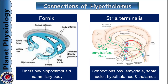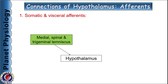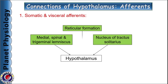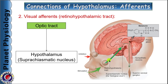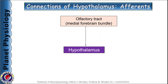Hypothalamus receives collaterals from the medial, spinal, and trigeminal lemnisci. It also receives signals from the nucleus of tractus solitarius and reticular formation — all collectively termed somatic and visceral afferents — which transmit various sensory inputs to the hypothalamus. Fibres from the optic tract, especially from photosensitive ganglion cells, convey visual signals to the suprachiasmatic nucleus via the retinohypothalamic tract. The hypothalamus also receives olfactory fibres through the medial forebrain bundle, thus processing not only general sensations but also special sensations.